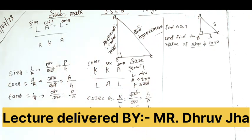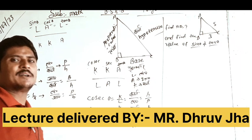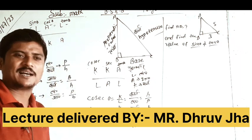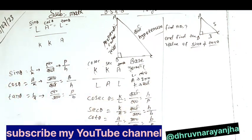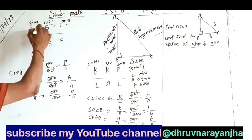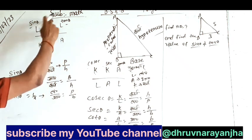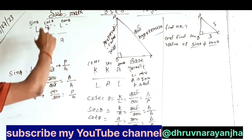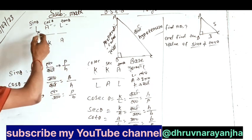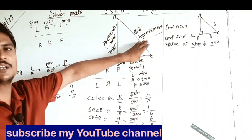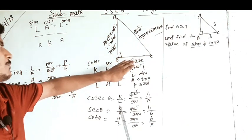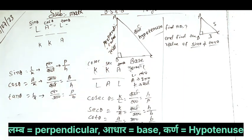Here we have Lal Kakakya. If you do Lal Kakakya, then sin theta becomes L by K, which is lambe by karn. Cos theta becomes A by K, which is aadhar by karn. Tan theta becomes L by A, which is lambe by aadhar. Karn is hypotenuse in English, aadhar is base, and lambe is perpendicular. So sin theta is p by h, cos theta is b by h.